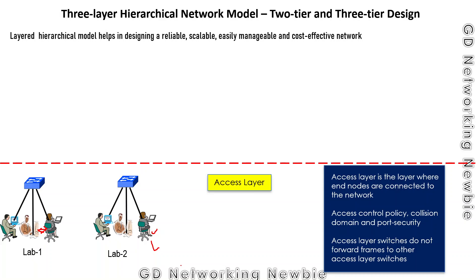The responsibility of the access layer is that this is the layer where end nodes are connected to the network. We can also define some access control policies — maybe collision domains and port security — at this access layer. Access layer switches do not forward frames to other access layer switches.